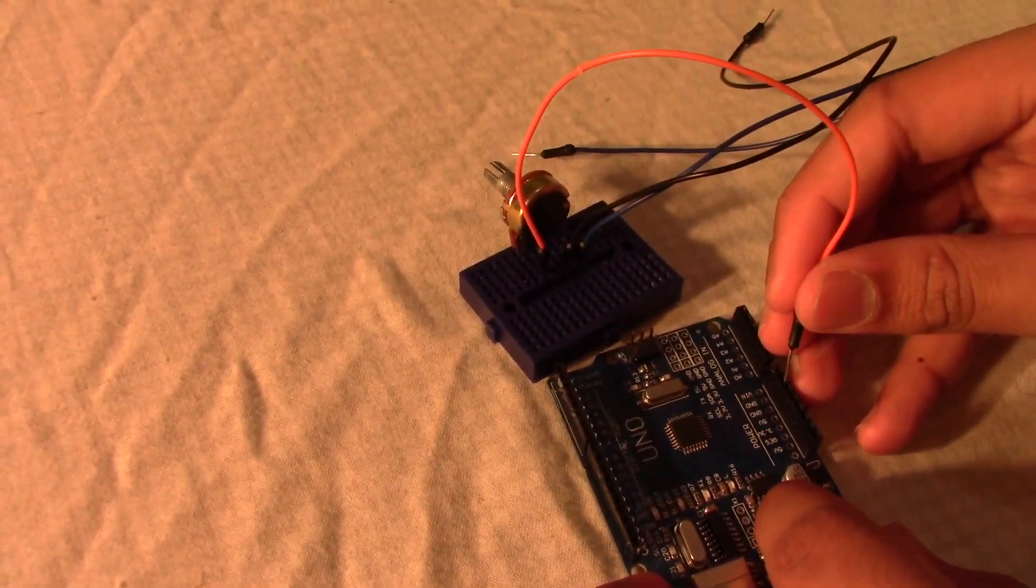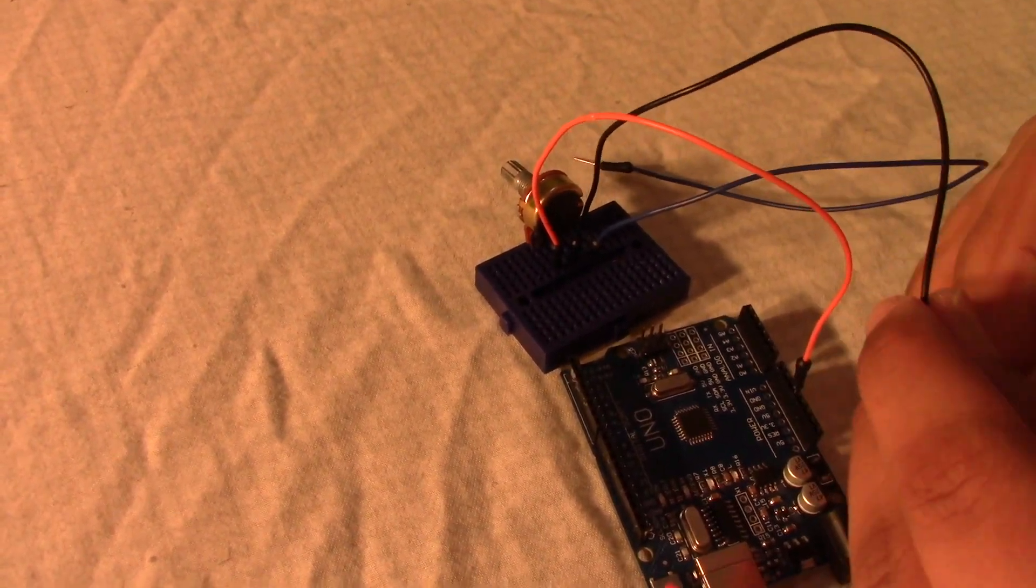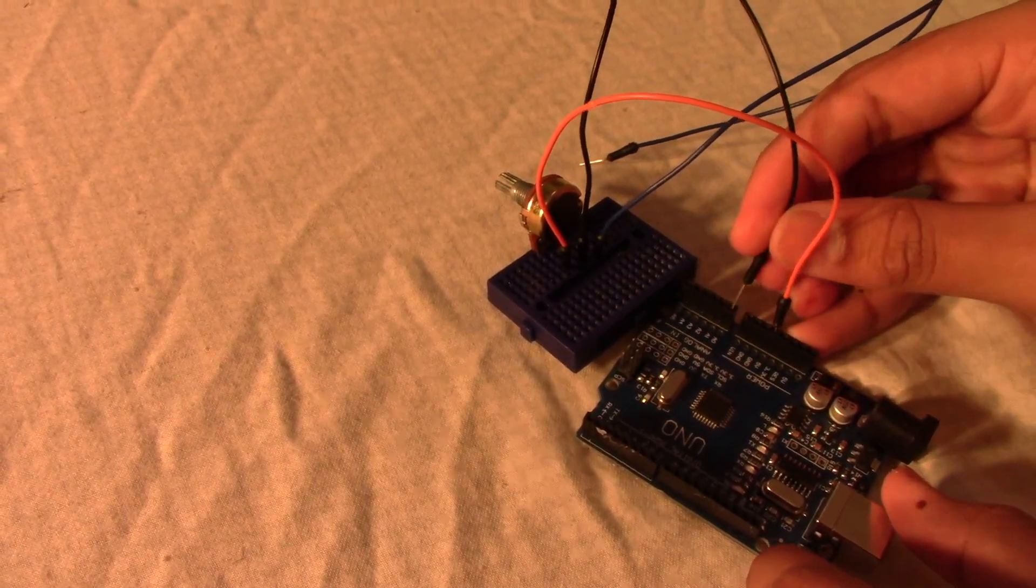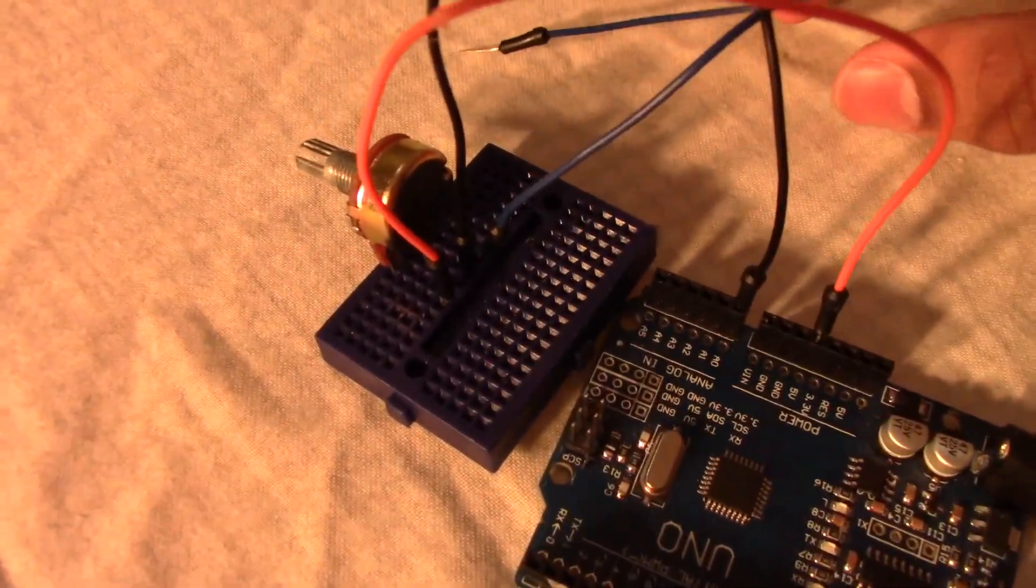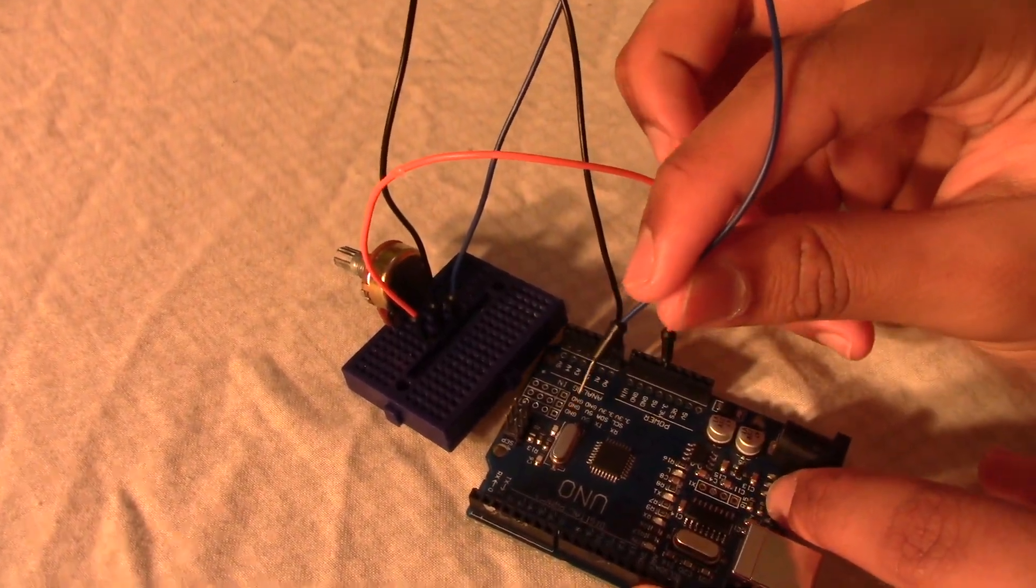You can use the 5-volt supply which is right here. Take the middle wire to analog pin number zero, the first analog pin, which is right there. And the last wire, the blue one, goes onto the GND over here.